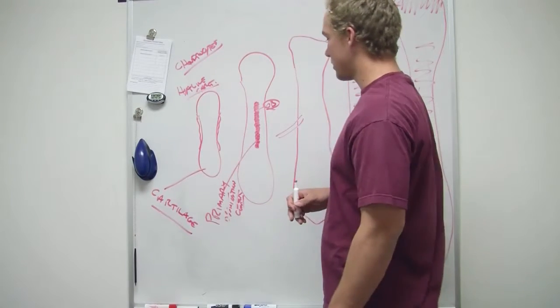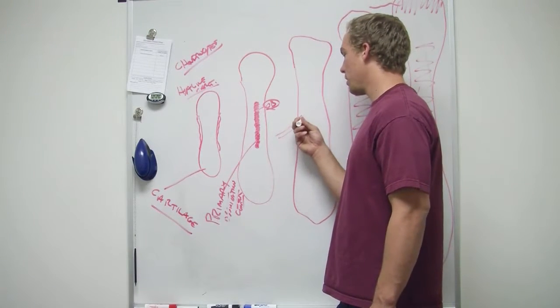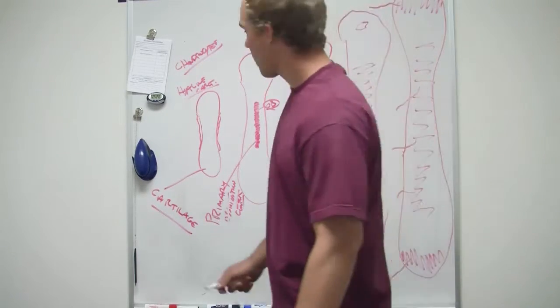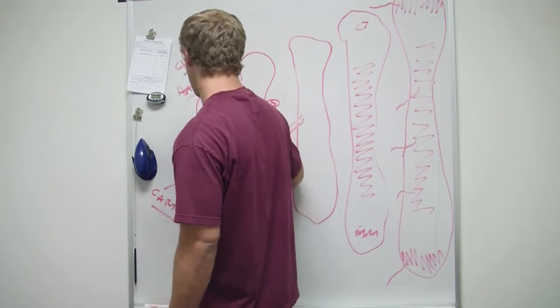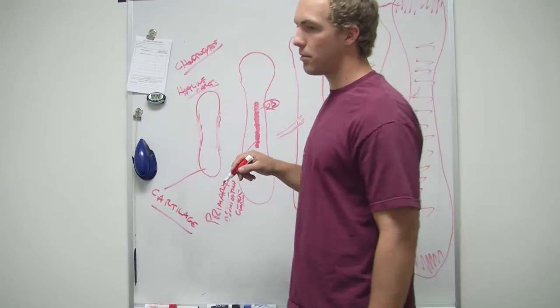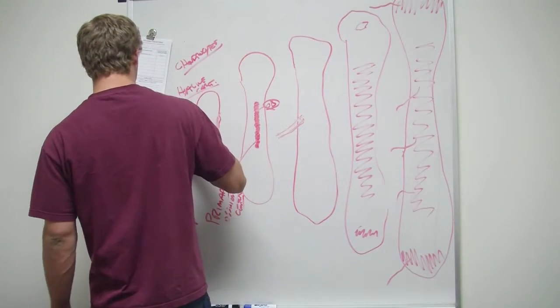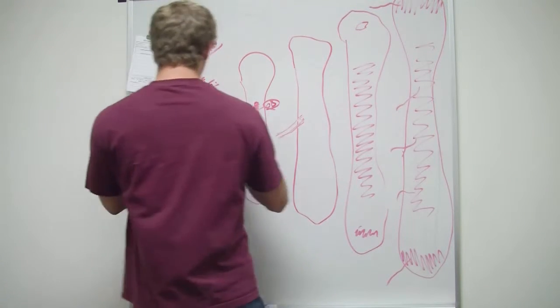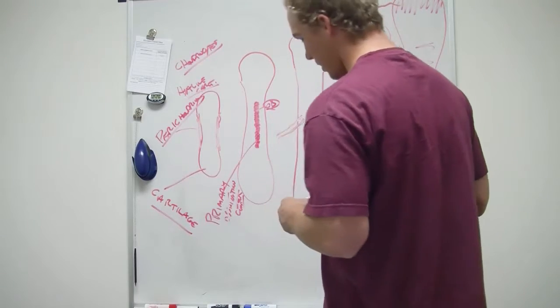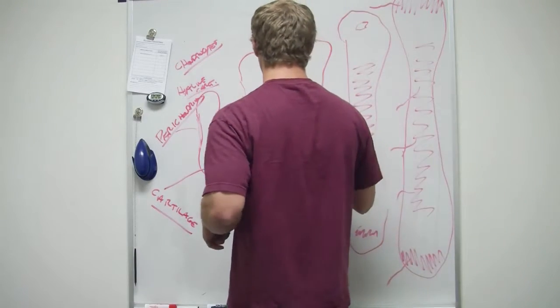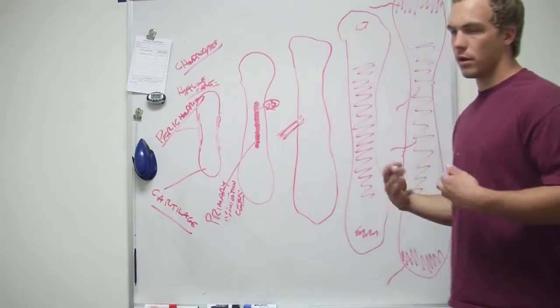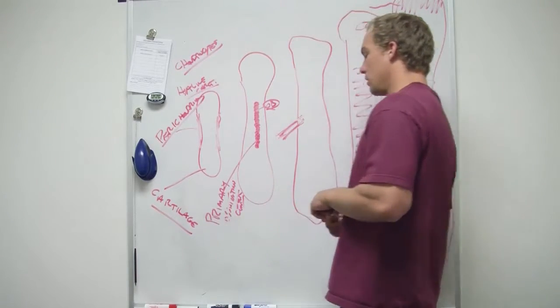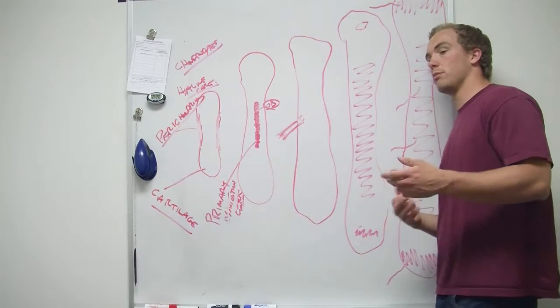Now, the primary ossification center formed, you're gonna get blood coming in to this new bony substance, right? And to deliver nutrients to this new primary ossification center, it delivers the things that are necessary to be able to form the actual bone part of it, right?